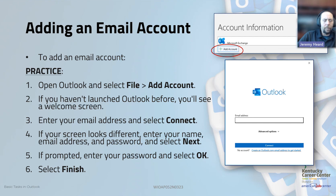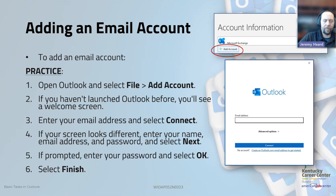The first thing you'll need to know in Microsoft Outlook is how to create a new account. To do that, you simply go to File and Add Account. In most cases, all you'll need to do is enter the email address and password. In a few rare cases you may have to enter some server information, but typically you just add your email address and password, then click Finish and it will finish setting up that account and making the connection.